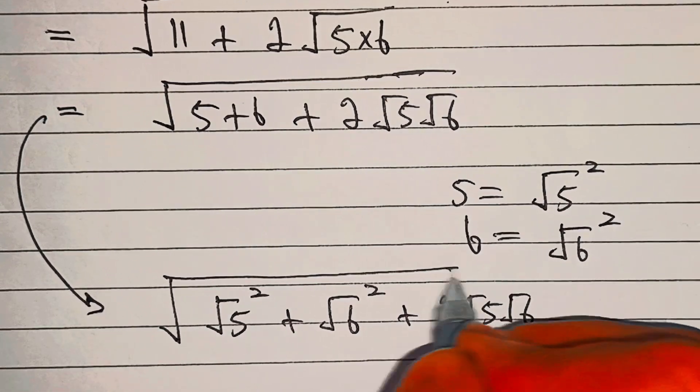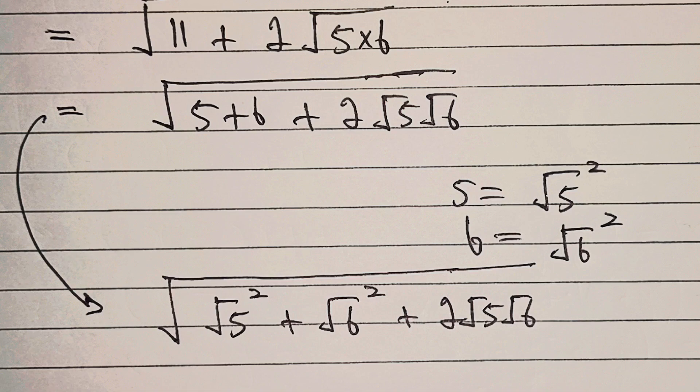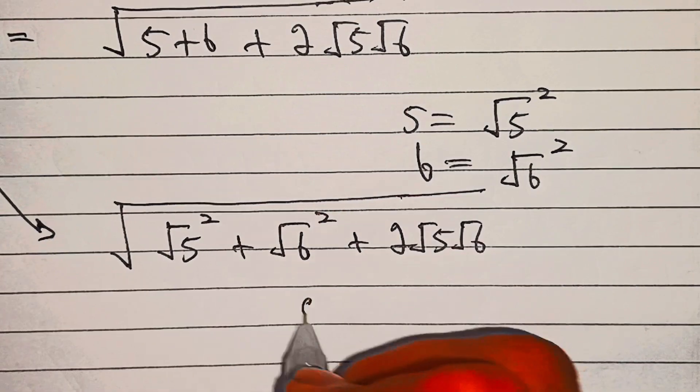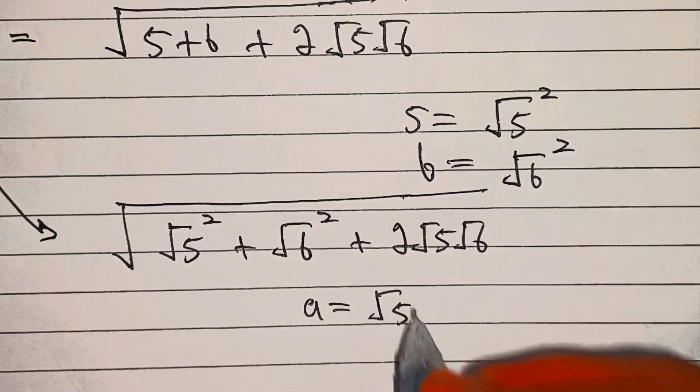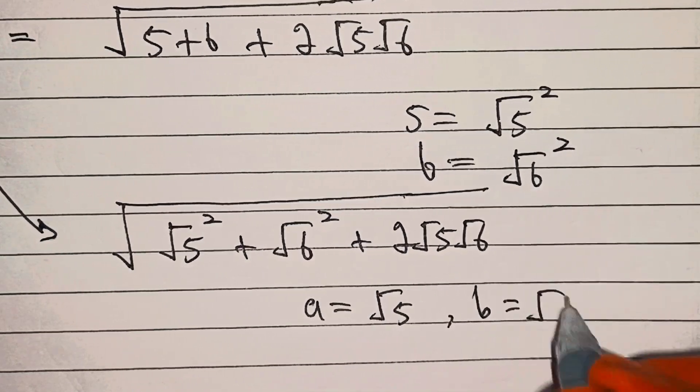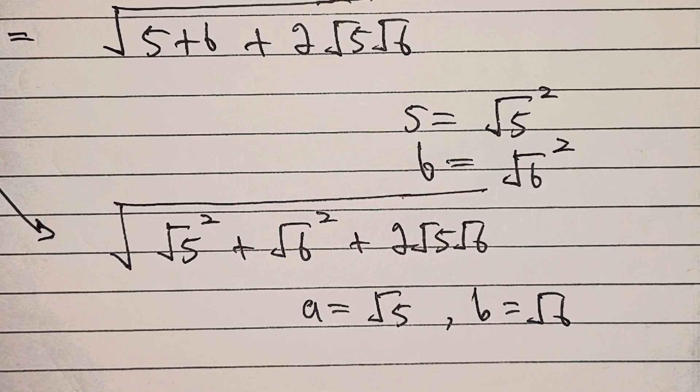where A equals under root 5 and B equals under root 6. So this is the form A squared plus B squared plus 2AB...